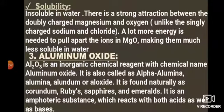Oxide number 3: aluminium oxide, Al2O3. It is an inorganic chemical compound also called alpha-alumina, alumina, alundum, or alooxide. It is found naturally as corundum, rubies, sapphires, and emeralds. It is an amphoteric substance — meaning it can react both with acids and with bases. Note: corundum is aluminium oxide, while carborundum is silicon carbide — a distinction commonly tested in entry exams.